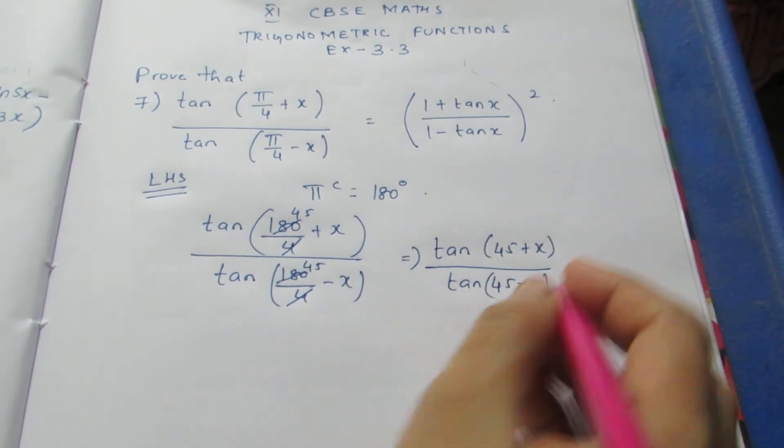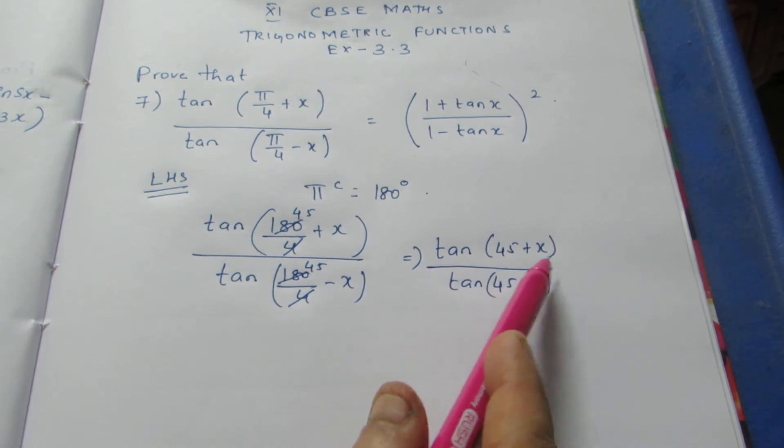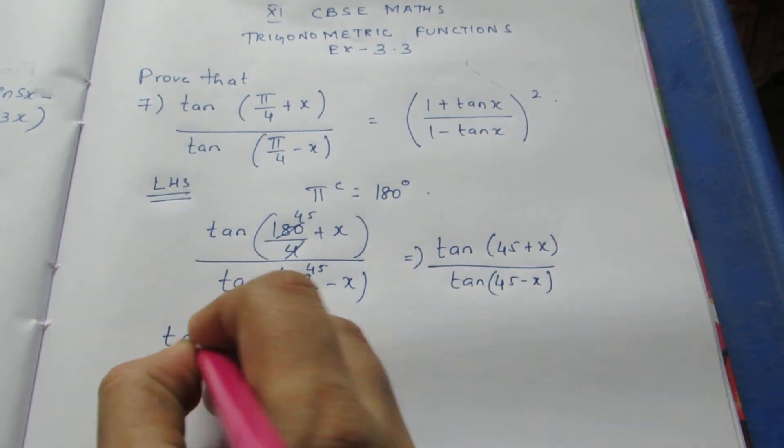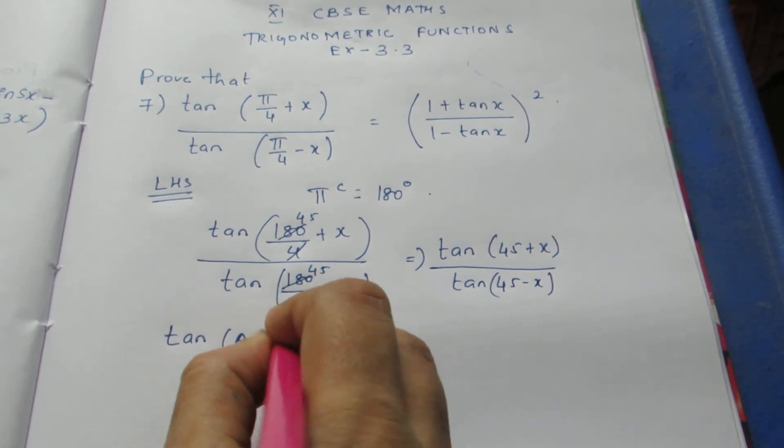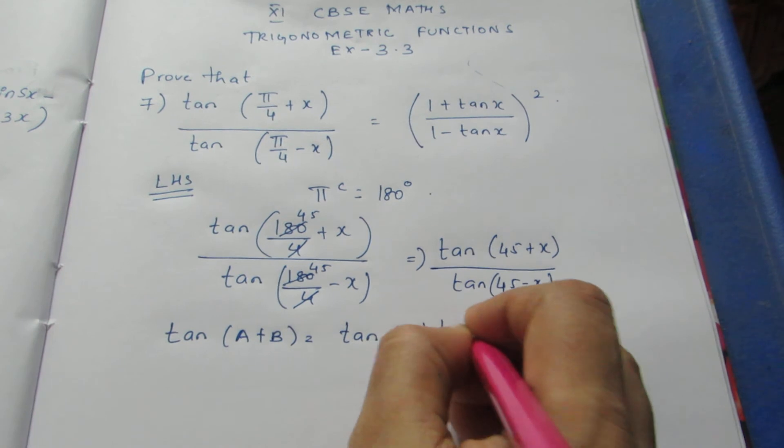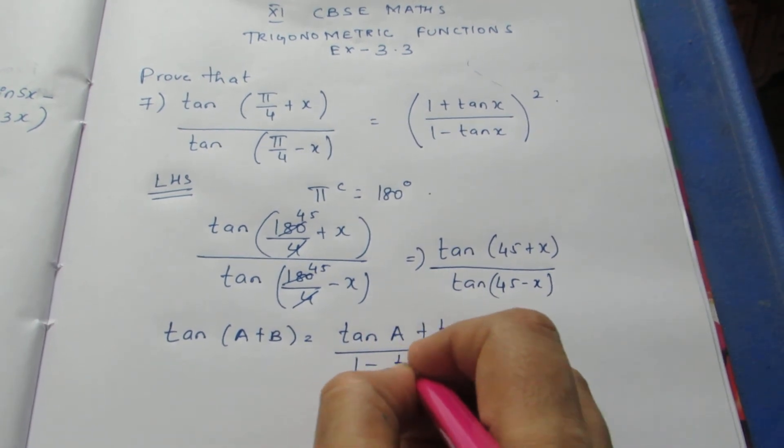We can't directly substitute the value of tan 45 and tan x. We can't split it like that. We need to use formula. For that, we know that tan(A + B), the formula is (tan A + tan B) by (1 - tan A tan B).